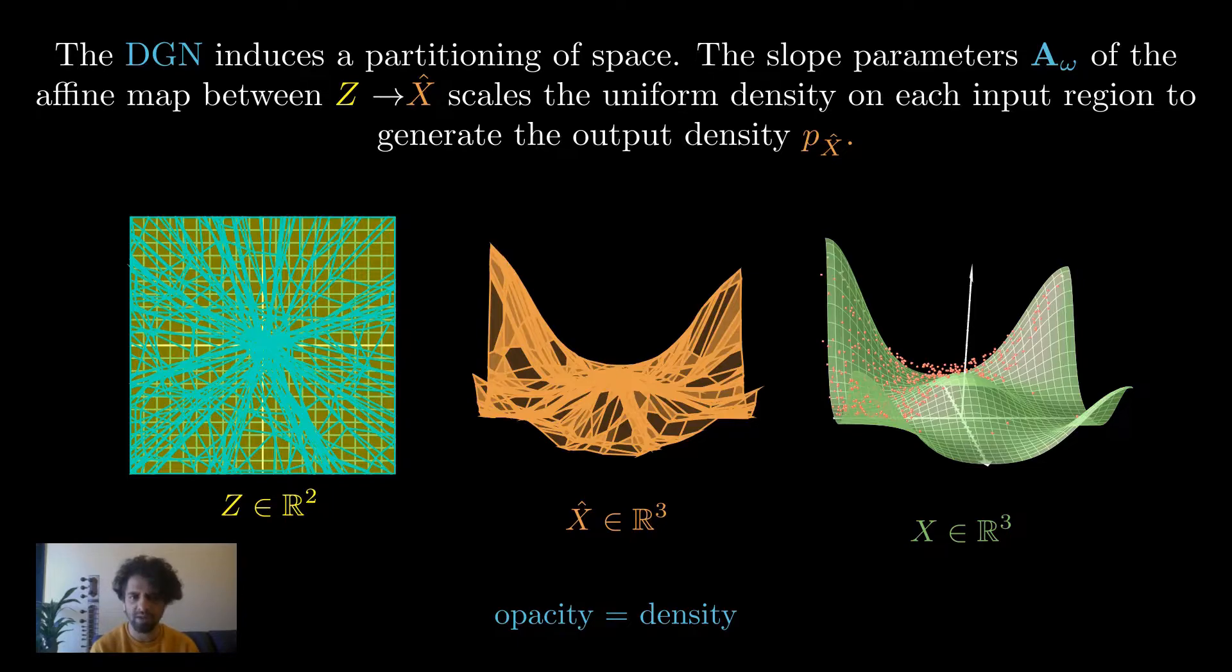The slope parameter a_omega for each region in z would scale the uniform density that lies on each input region to generate the output density per region, necessarily generating the p_x_hat. We can clearly see here denoted by the opacity of the output regions that p_x_hat on the manifold is not uniform.